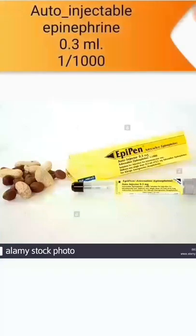There are two products of epinephrine. The first is the auto-injectable type, which contains 0.3 mg of epinephrine with a concentration of 1 to 1000. This type is usually given to patients with a history of anaphylaxis. It is injected in the thigh, which is the preferred site for injection, and is safer with fewer side effects.